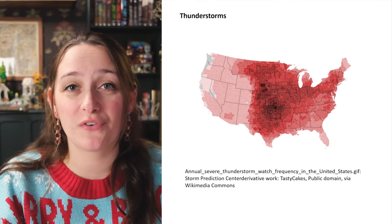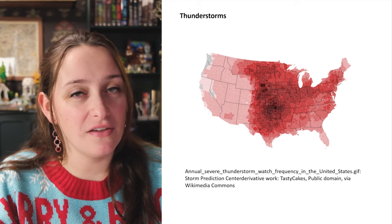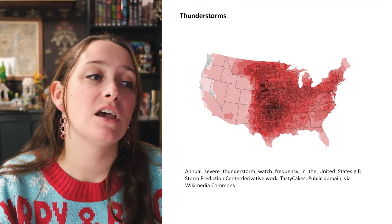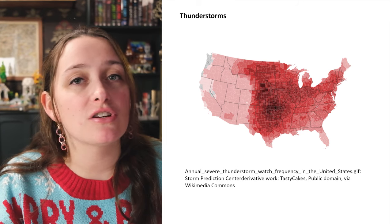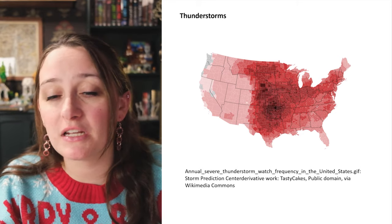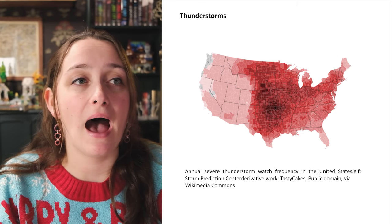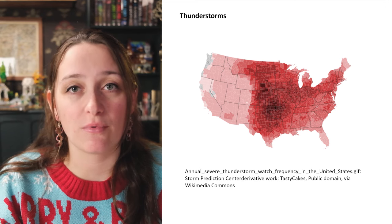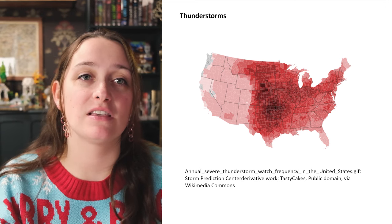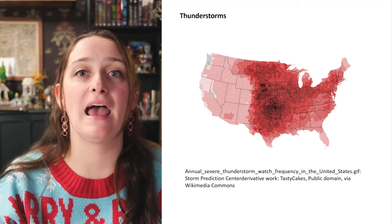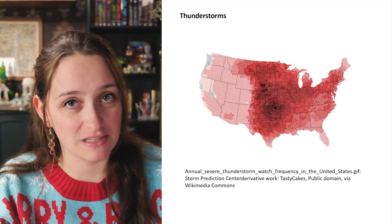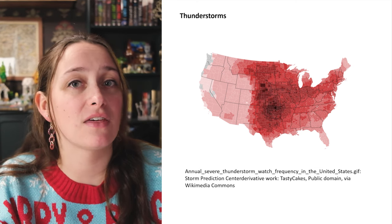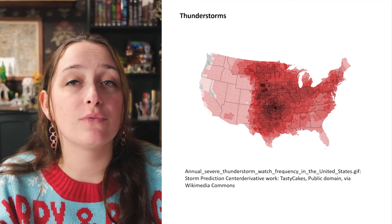First, we're going to talk about thunderstorms. In theory, thunderstorms are possible everywhere under the right conditions, but certain areas will have them more often due to specific conditions that make them more likely and powerful. In general, thunderstorms tend to form as warm, humid air rises into cold air — the air cools, drops, warms again, and rises again, creating a convection cell. The number of convection cells determines how severe or long-lasting a thunderstorm is.